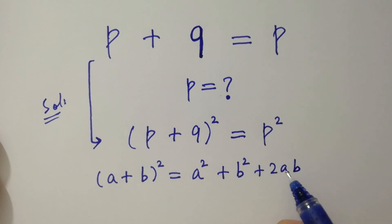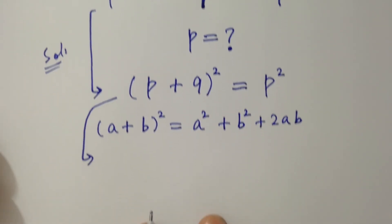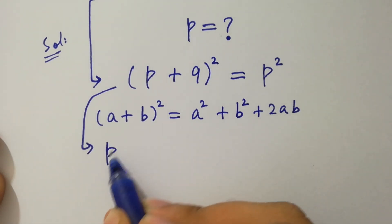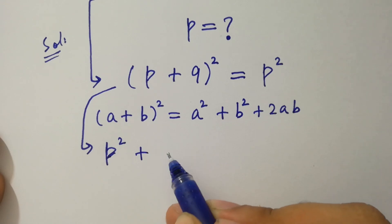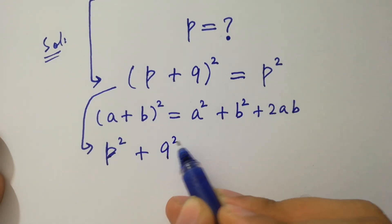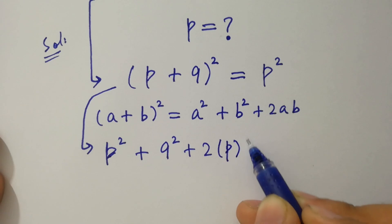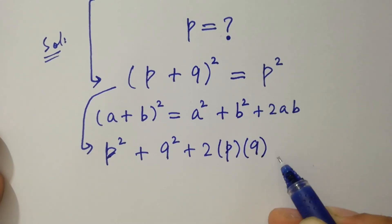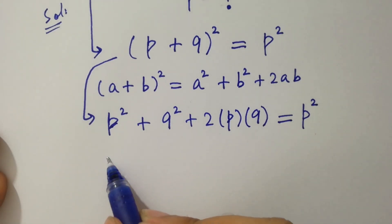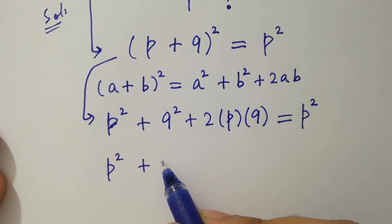Apply. Now we have p squared plus 9 squared plus 2 times p times 9 equals p squared. As it is, p squared plus 9 times 9 is 81.